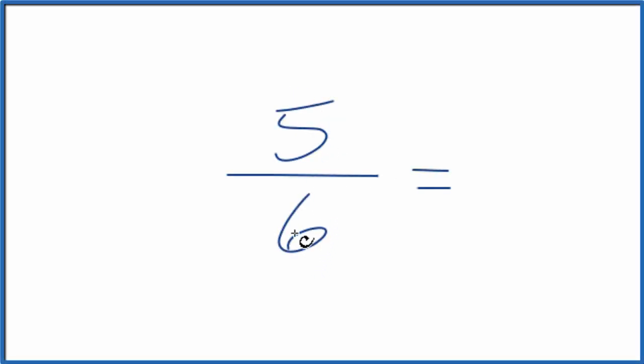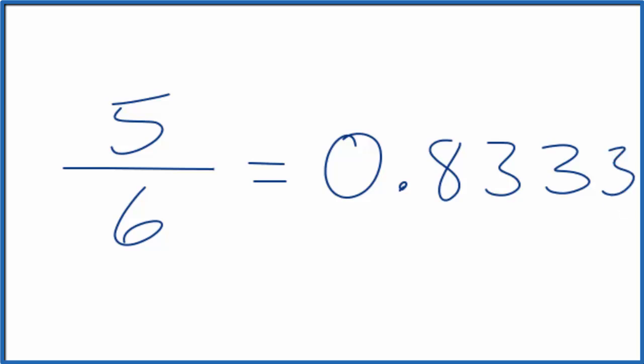Let's write the fraction 5/6 in decimal form. So what is 5 over 6 in decimal form? You could just put this in your calculator. Divide 5 by 6 and you'd get 0.83 and the 3 would just keep repeating.